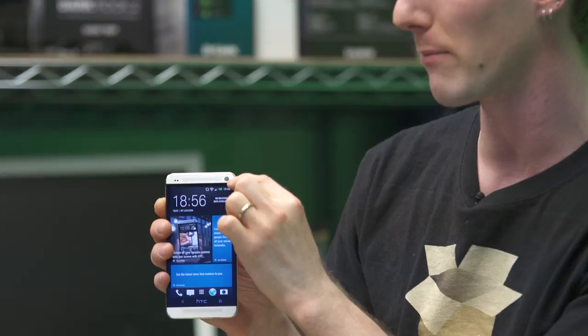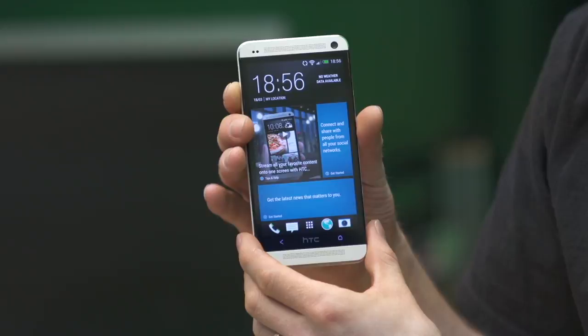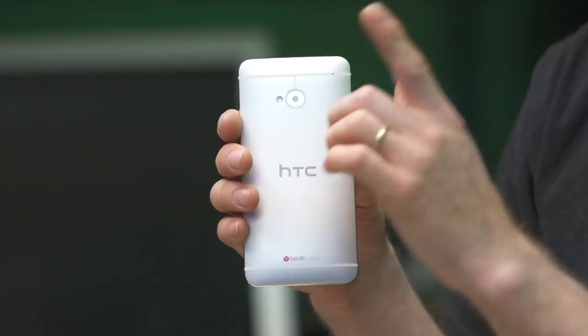They've added a 1080p front-facing camera, so that's a 2.1 megapixel still, 1080p 30fps video camera, in addition to the 4 megapixel 1080p 30fps rear camera. Hold on, why did I just say 4 megapixel? They're calling this ultra pixel. Rather than having lots of tiny, micro, dense pixels,